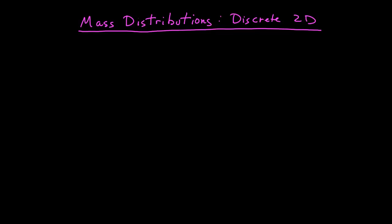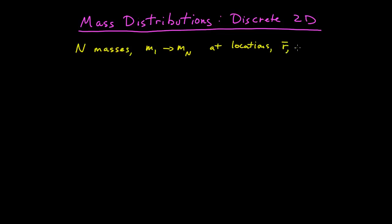Now I want to extend our discussion of discrete mass distributions into two dimensions. We start with the same idea of a discrete mass distribution. We have n masses, m1 through m sub n, at locations described by the vectors r1 through rn, and those vectors are now in a two-dimensional plane.